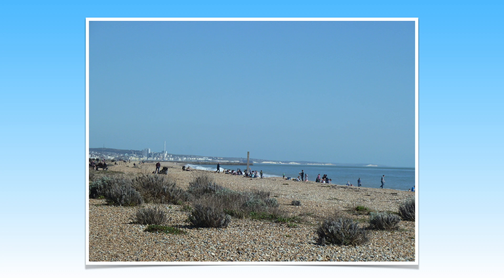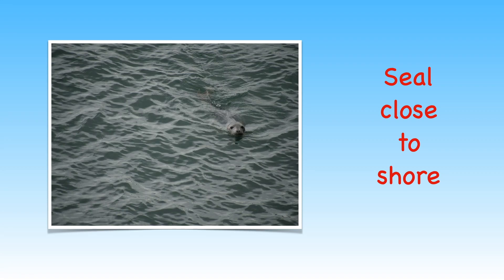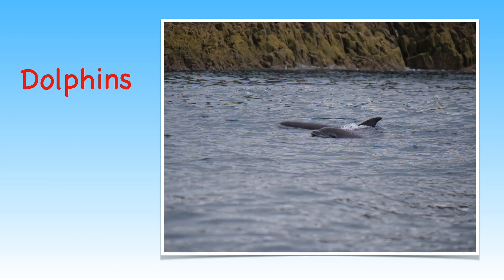Shingle beaches are different to sandy beaches. These are beaches made up of small pebbles and different sorts of plants grow here. Many different sea creatures such as seals and harbour porpoises are found in the sea close to the shoreline.